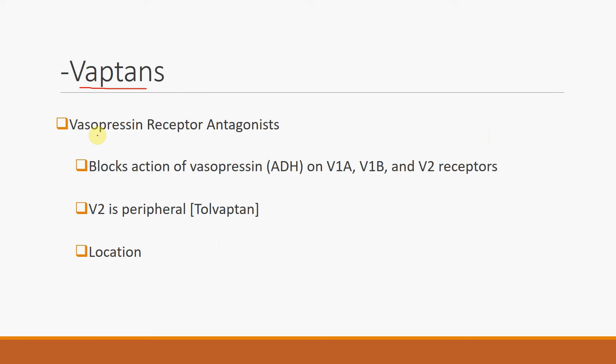The drug class of the Vaptans are essentially vasopressin receptor antagonists, and they block the action of vasopressin or ADH on V1A, V1B, and V2 receptors.